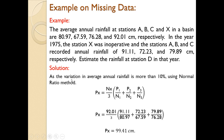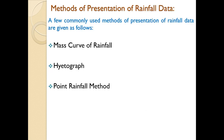Solution: As the variation in average annual rainfall is more than 10% when comparing N1, N2, N3 with Nx = 92.01, the normal ratio method is used. So Px = (Nx / 3) × (P1/N1 + P2/N2 + P3/N3), and Px comes to be 99.41 cm. In this way, one can very easily find out the missing data for a particular day.